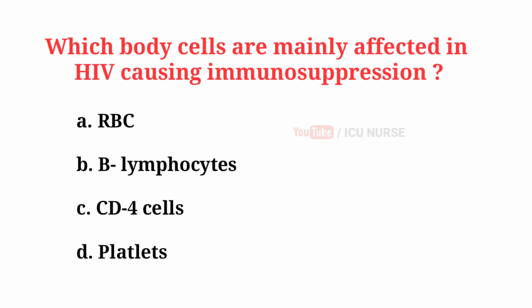Which body cells are mainly affected in HIV causing immunosuppression? The correct answer is C, CD4 cells.